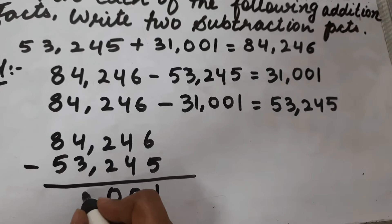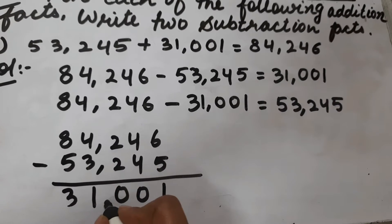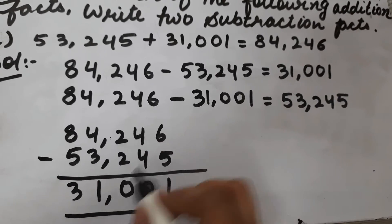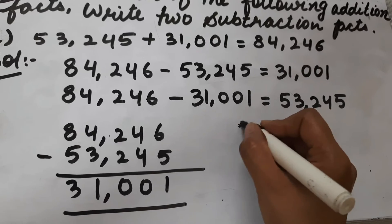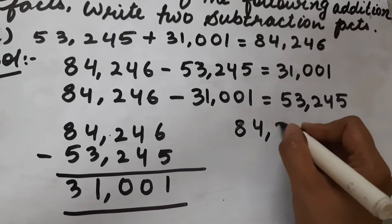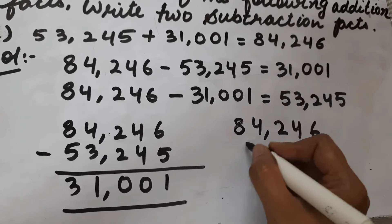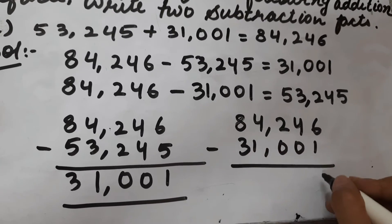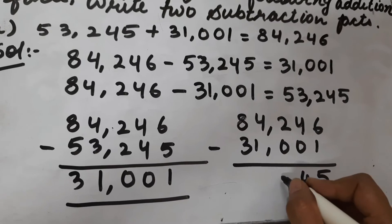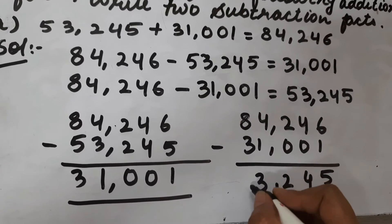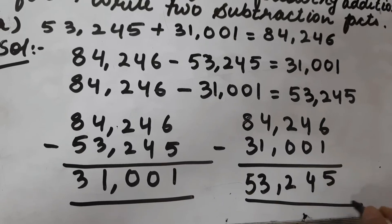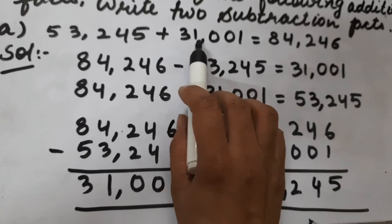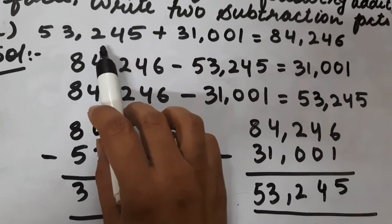2 minus 2 is 0, 4 minus 3 is 1, 8 minus 5 is 3. So if we subtract the first addend from the total, we will get the second addend, which is 31,001.